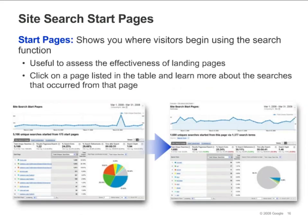You can use the Start Pages report to find out how many searches were initiated on each page of your site. The easiest way to find this report is to click on Start Pages under Site Search in the left navigation. The Start Pages report lists all of the pages from which visitors searched. Click on a page in the table to learn more about the searches that occurred from that page. A detail report will appear which lists all the search terms that were used from that page.